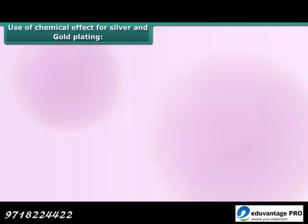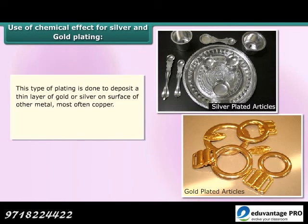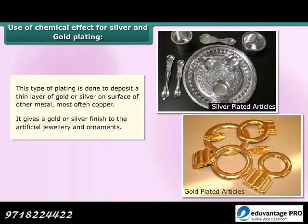Use of chemical effect for silver and gold plating: This type of plating is done to deposit a thin layer of gold or silver on the surface of another metal, most often copper. It gives a gold or silver finish to artificial jewelry and ornaments — resulting in silver-plated and gold-plated articles.